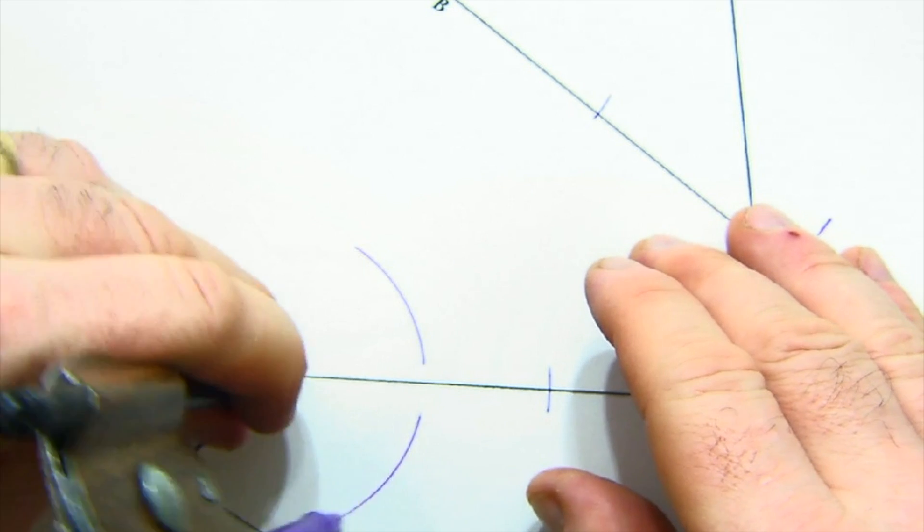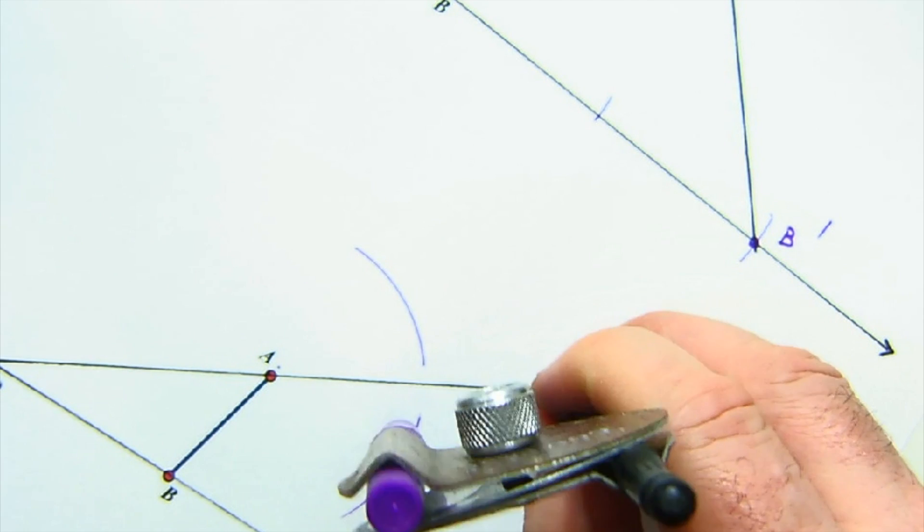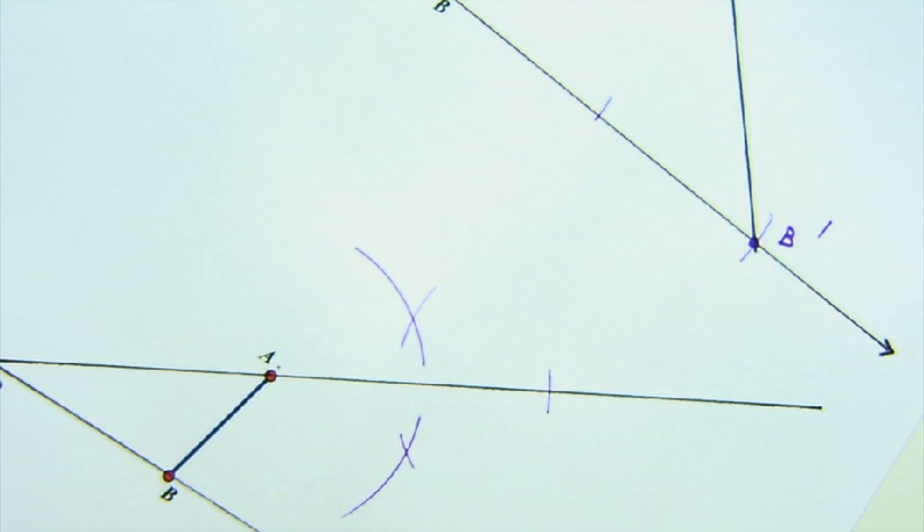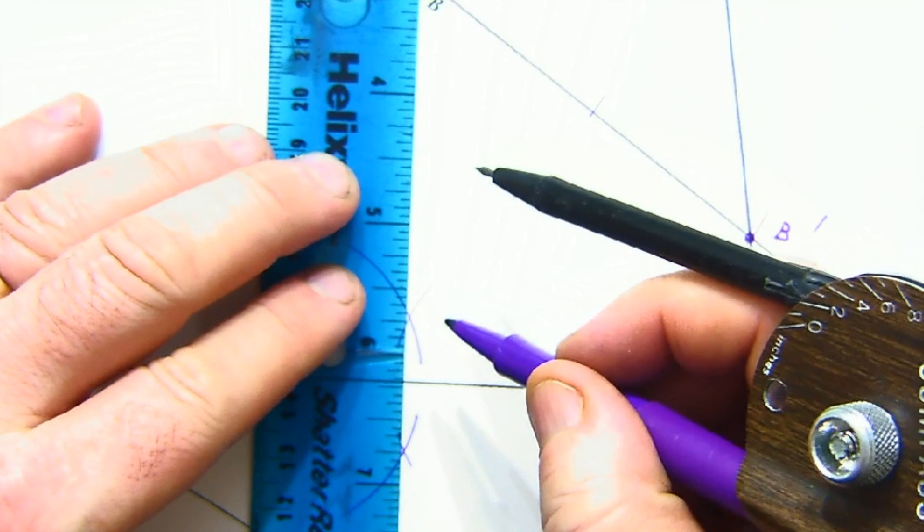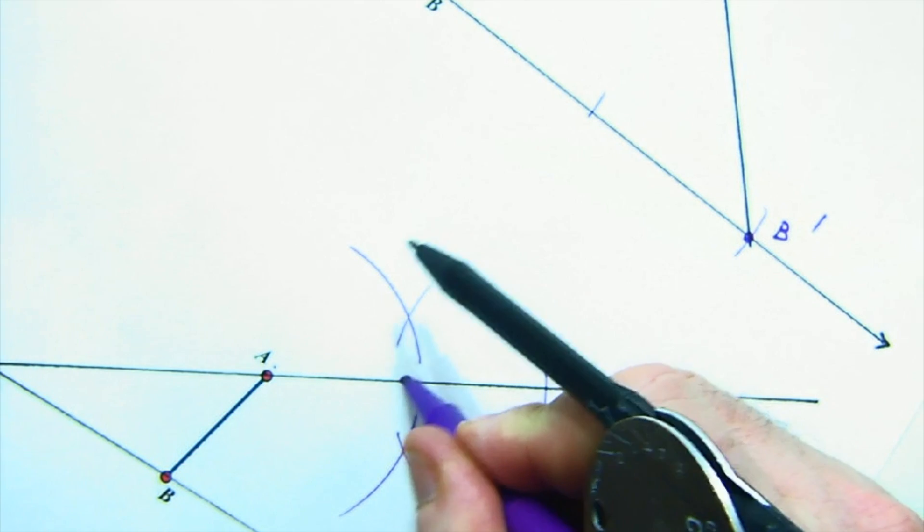I'm going to do one and a half, and there is my midpoint construction. And I lay that down and I decide where that's at, and there is A prime.